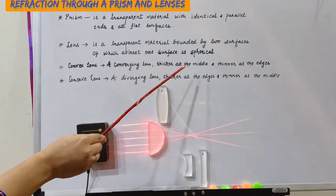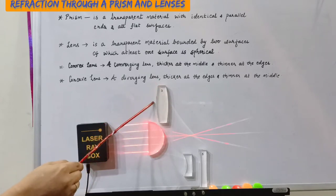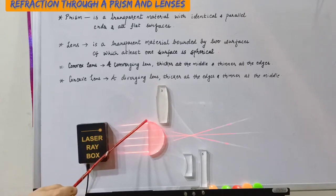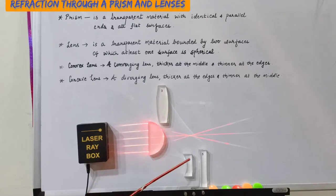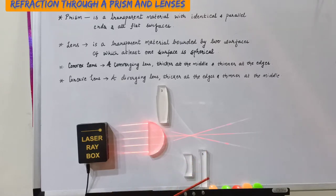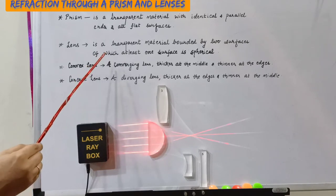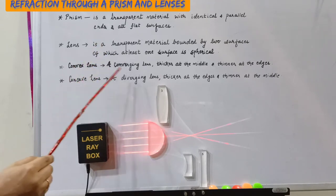You can see here both surfaces are spherical. Here one surface is plain and the other is spherical. In this lens also one surface is plain and the other is spherical. In the case of this lens, both surfaces are spherical.